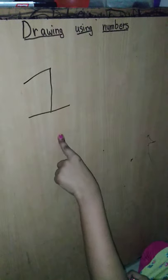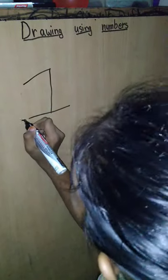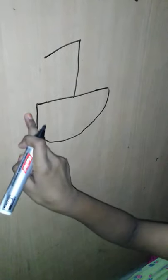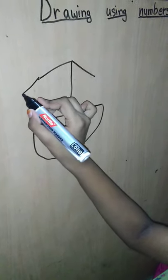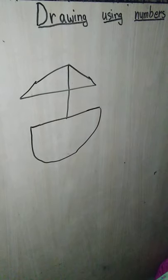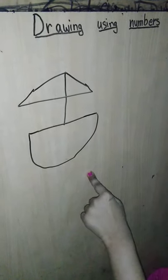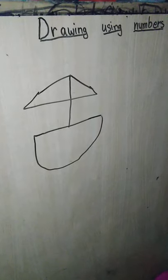After drawing the number one, extend the line underneath — you might get something like this. Then draw a C-type shape underneath it, like a semicircle. Draw another line and join these together. Can you guess what it is? Yes, it is a boat!